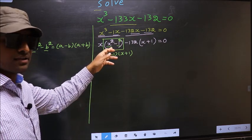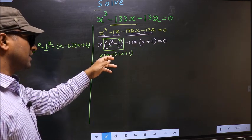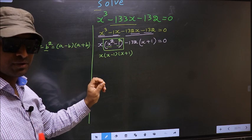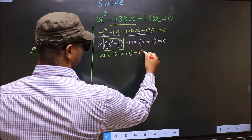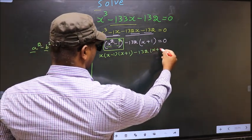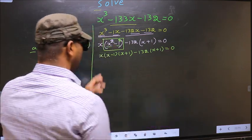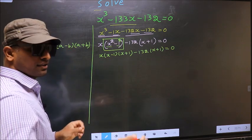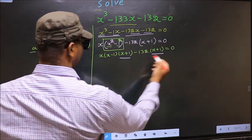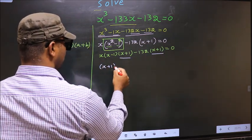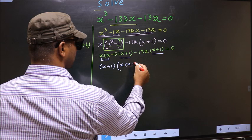We applied the formula a squared minus b squared equals a minus b times a plus b. Now the second part has no change, so minus 132 times x plus 1, equal to 0. From this entire expression, we can take out x plus 1 as common. So x plus 1 is outside, and we are left with x times x minus 1.